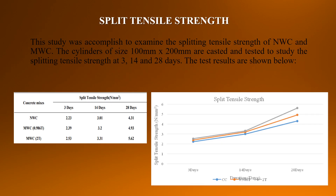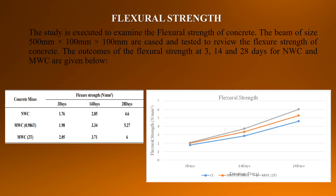Regarding split tensile strength: this study was accomplished to examine the splitting tensile strength of Normal Water Concrete (NWC) and Magnetized Water Concrete (MWC). Cylinders of size 100 × 200 mm were cast and tested to study the splitting tensile strength at 3 to 28 days. For flexural strength, beams of size 500 × 100 × 100 mm were cast and tested. The outcomes of flexural strength at 3 to 28 days for NWC and MWC are given below.